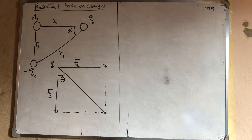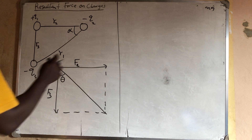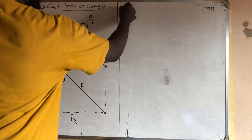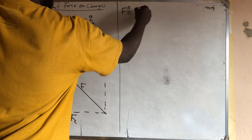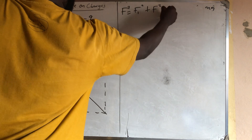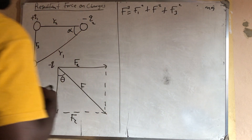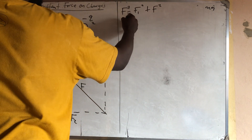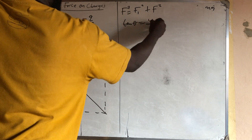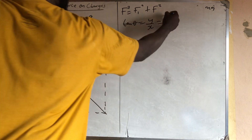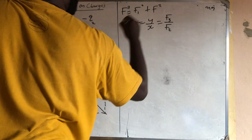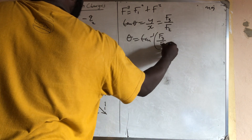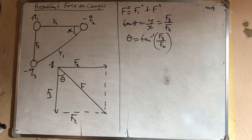The resultant F is found using: F² = f1² + f2² + f3² and so on. For the angle, when it is with the horizontal: tan(θ) = y/x, where the component in y is f3 and the component in x is f2. Therefore θ = tan⁻¹(f3/f2).